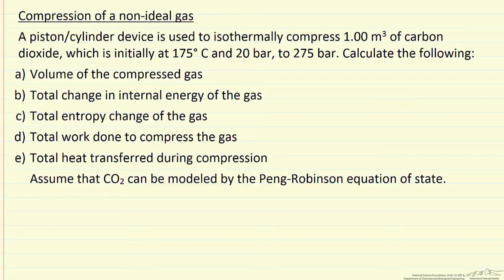In this problem we want to compress a real gas, a non-ideal gas, carbon dioxide, that's initially at 175 degrees and 20 bar. We want to compress it to 275 bar and do this isothermally at 175 degrees. We want to determine the final volume, the internal energy change, the entropy change, the work done to compress the gas, and the total heat transfer during compression.